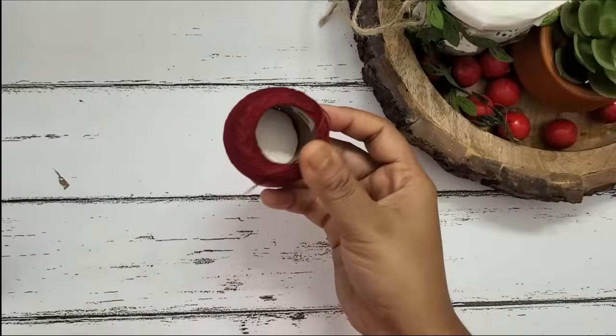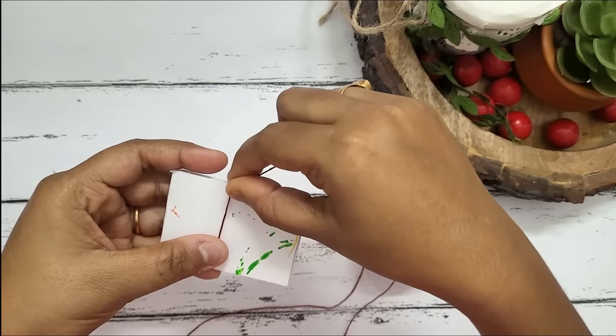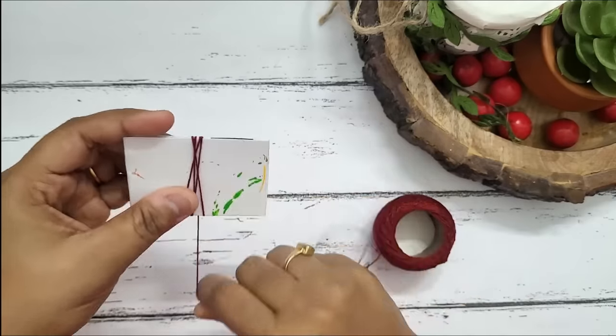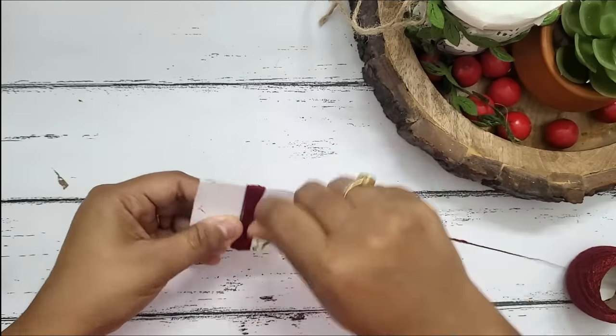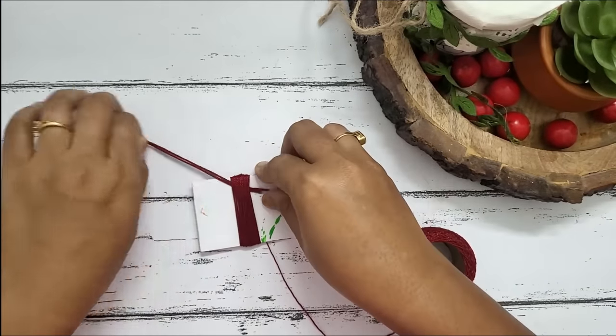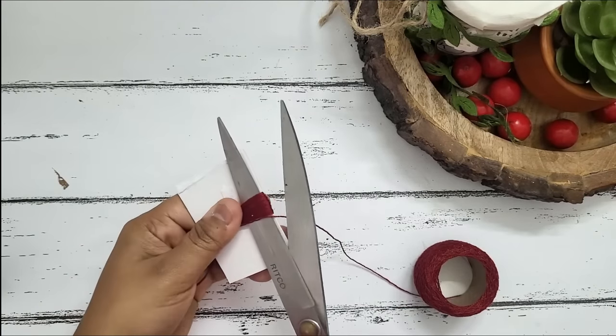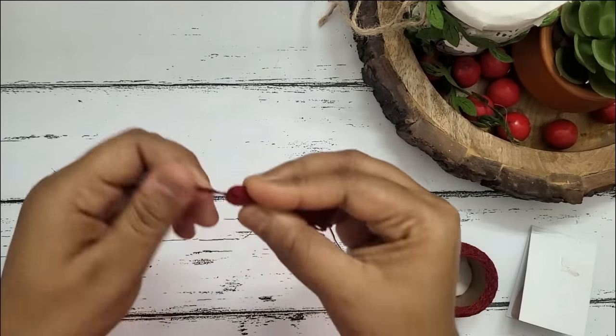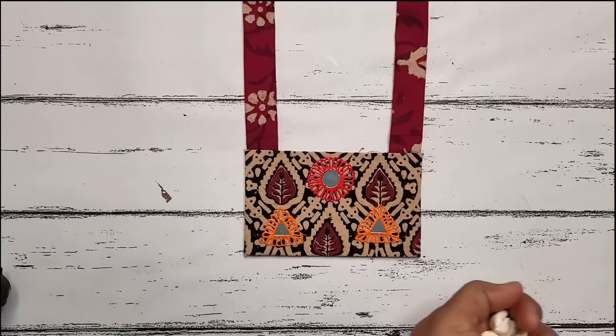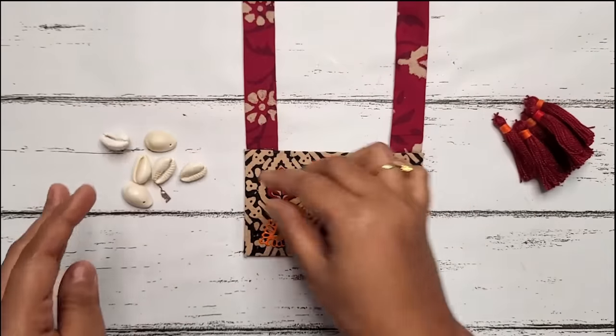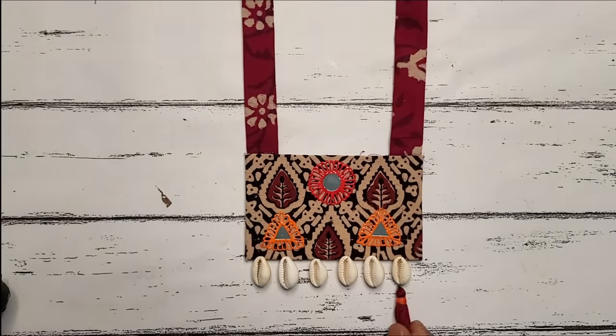Here I have taken a cotton thread and a piece of cardboard and rolling the thread up to certain thickness on the cardboard, tying a knot on one side and cutting the other side. Tada, our handmade tassels are ready to use.